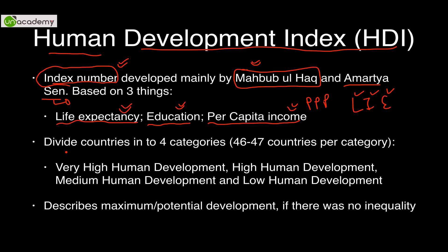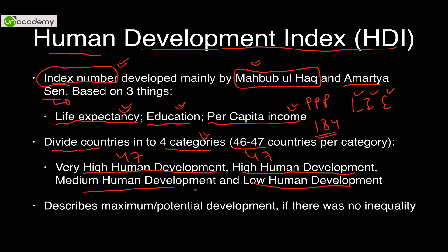HDI divides countries into four categories, with roughly 46 to 47 countries in each category — giving us approximately 184 countries whose data is calculated. The four categories are: Very High Human Development, High Human Development, Medium Human Development, and Low Human Development. This is essentially a quartile classification. The first 47 countries fall in Very High, then High, then Medium, and then Low.